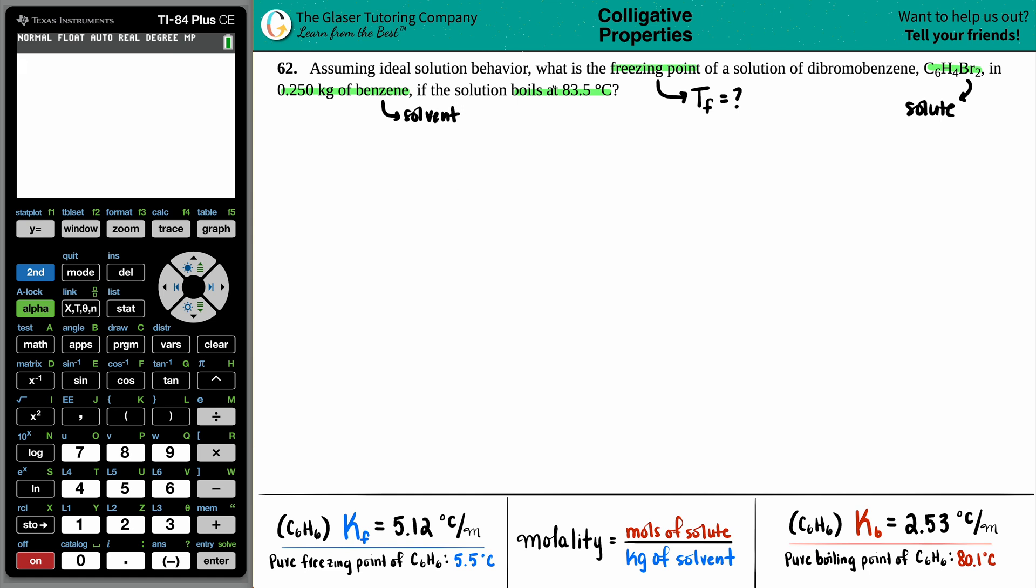Now the only thing that we know is that we have a boiling point. The solution, which is always the solute plus the solvent combined, is boiling at 83.5 degrees. So they give us a TB of 83.5. They're looking for a freezing point, but they're giving us information about boiling. So maybe I'm going to use my boiling point elevation formula.